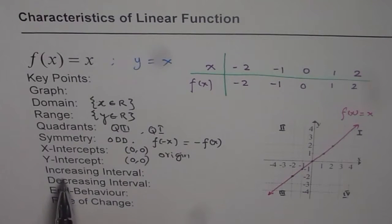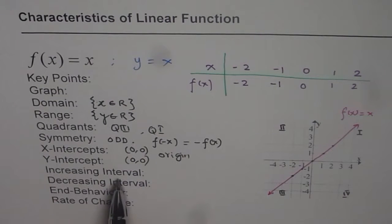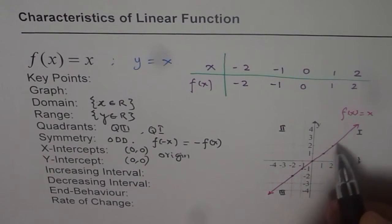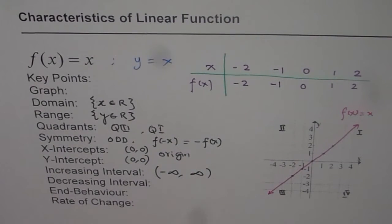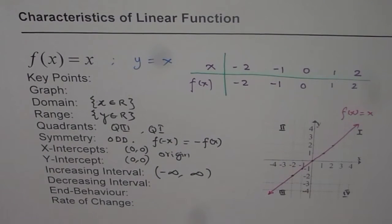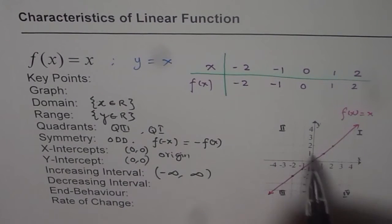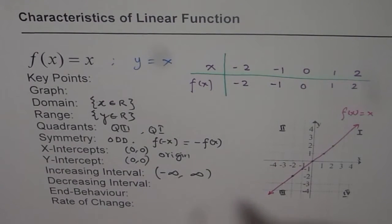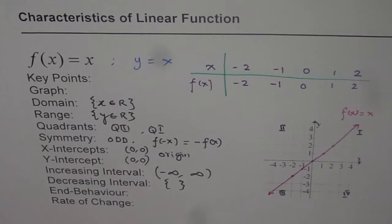Increasing interval: whenever we say interval, it is the range from one value to another — always read a graph from left to right. As you can see, the line is always increasing, so we can write this interval as from minus infinity to plus infinity. Decreasing interval: the line never decreases, so that is a null set — there is no solution here.